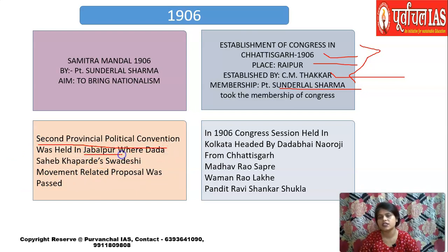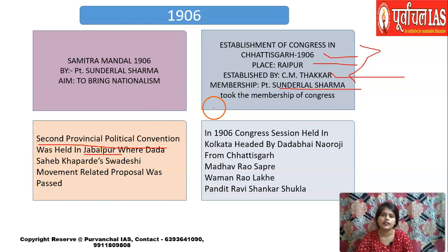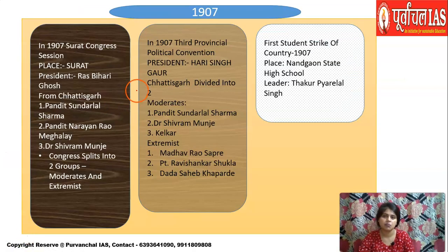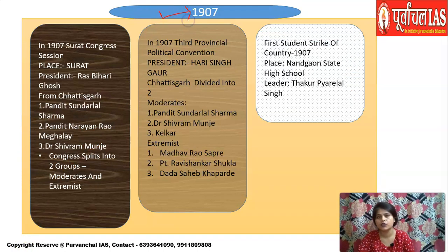The second provincial political convention was held in 1906 at Jabalpur. In 1905 the first was at Nagpur, then in 1906 at Jabalpur, where Dada Sahib Khaparde's Swadeshi movement-related proposal was passed. So both at the national Congress session in Kolkata and at the provincial convention, proposals related to the Swadeshi movement were passed in 1906.